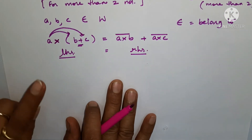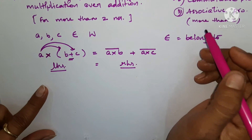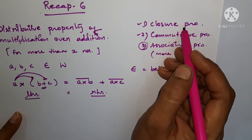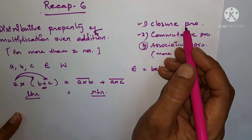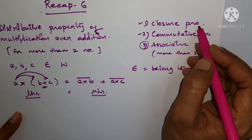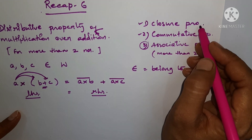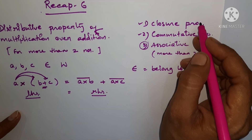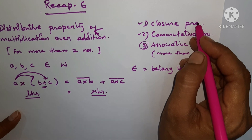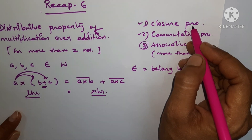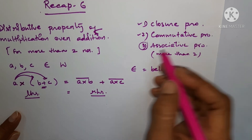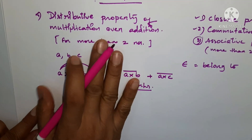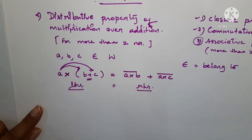This property is applicable in all cases — whole numbers, integers, and so on. We are not going to take an example for closure property here, but for commutative, associative, and distributive property we will be dealing with one question each in the next recap. Thank you.